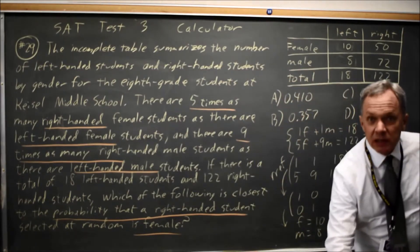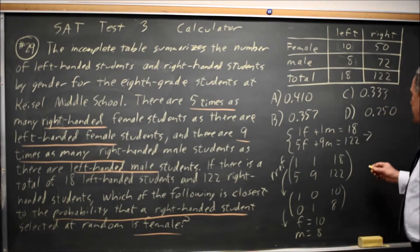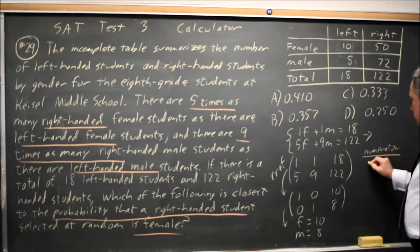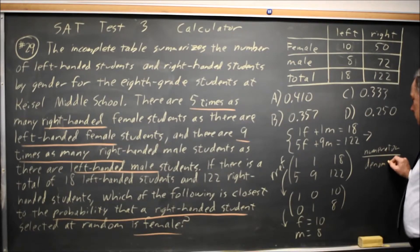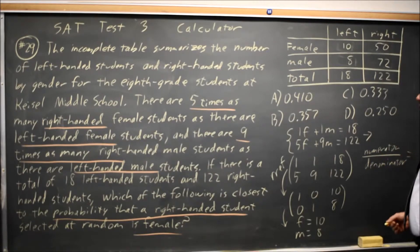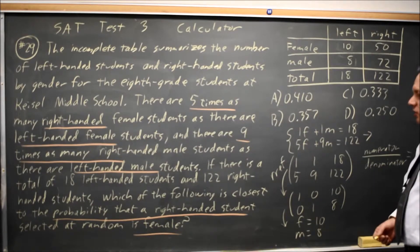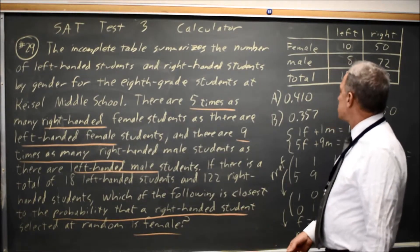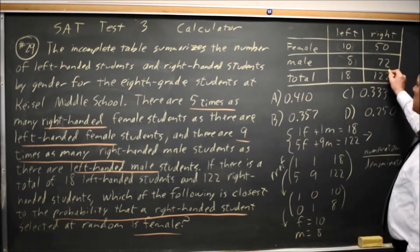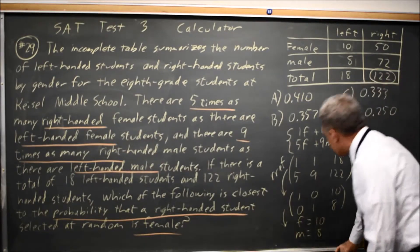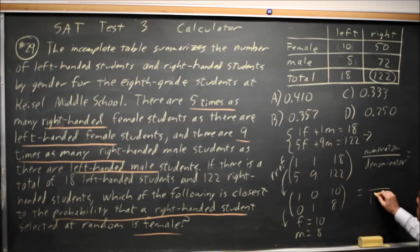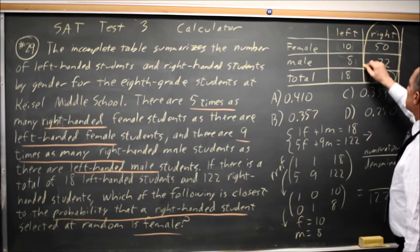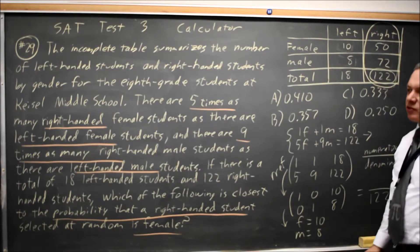When I'm finding a probability, I need a numerator and a denominator. The denominator is all the individuals I might have chosen, and here they said probability that a right-handed student. So my denominator is all right-handed students, which is 122. And my numerator is, of those right-handed students only, how many are female?